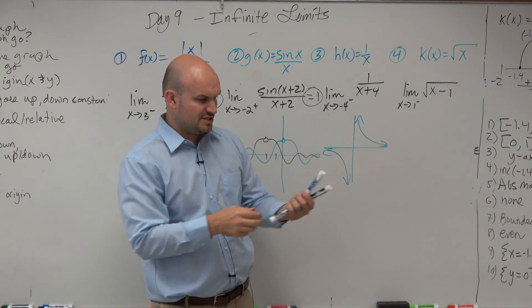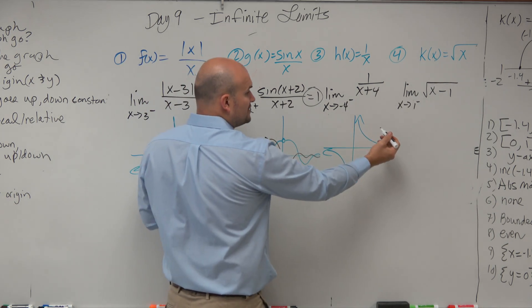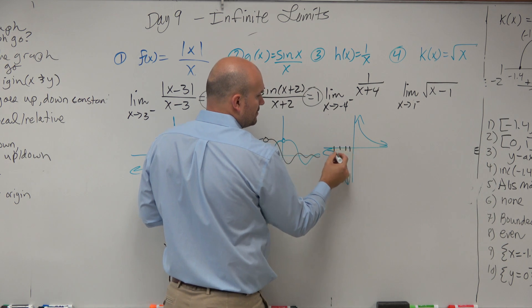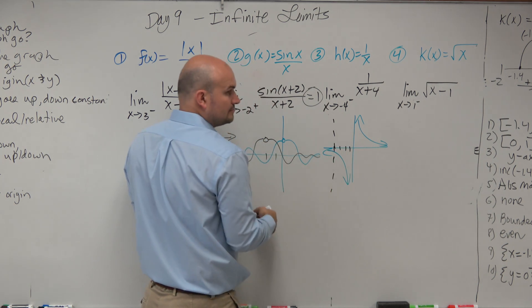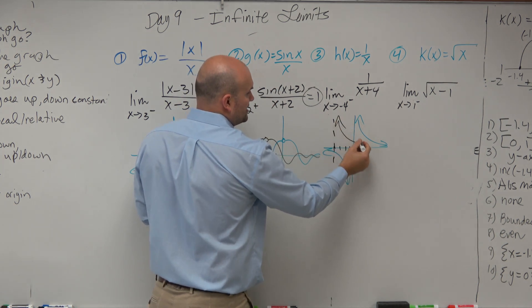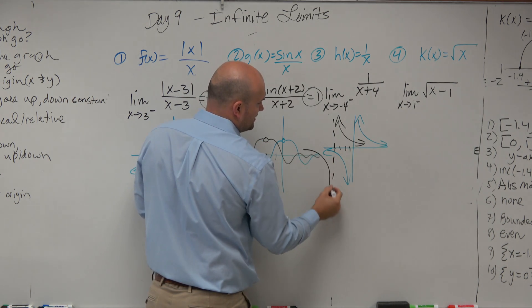So now, we have this plus 4, so what does that do? That just shifts the graph to the left 4. So now, the graph looks like this, and then it goes down like that.